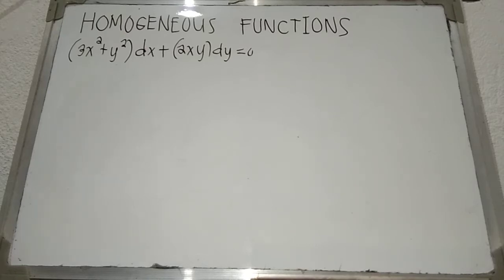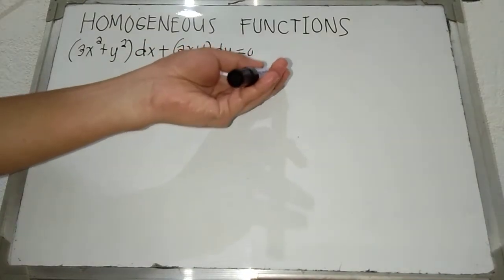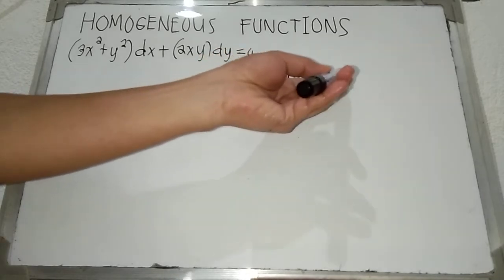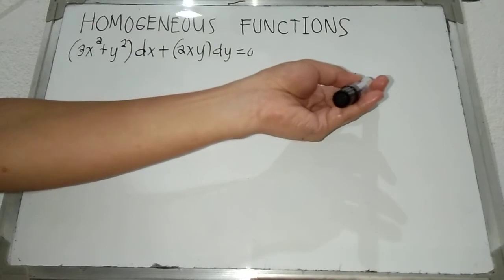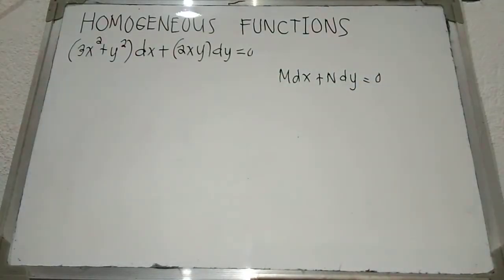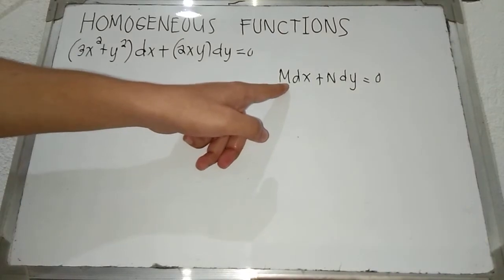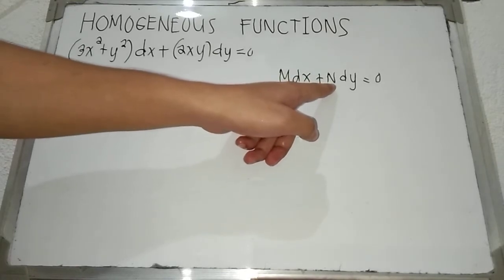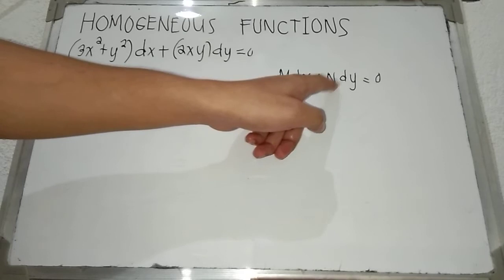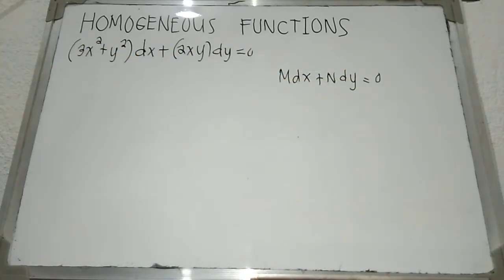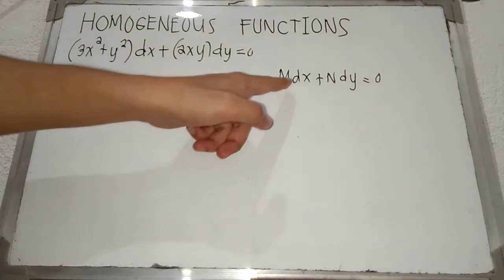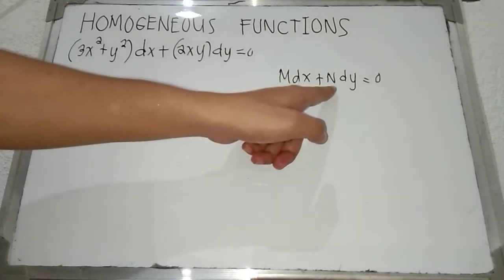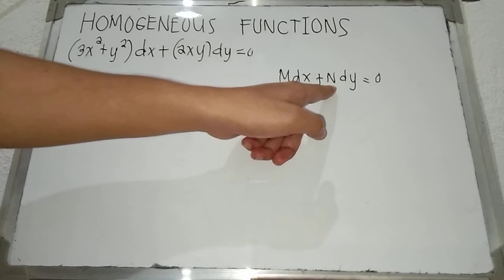We have here the standard differential equation: M dx plus N dy is equal to 0. Our function M is a function of two variables x and y, which is beside dx, plus our function N is a function of two variables x and y, which is beside dy, is equal to 0. We could say that this differential equation is a homogeneous equation if both functions M and N are homogeneous of the same degree.